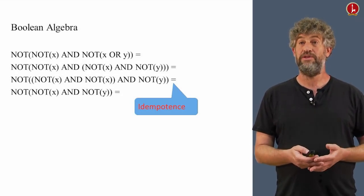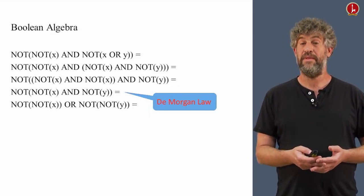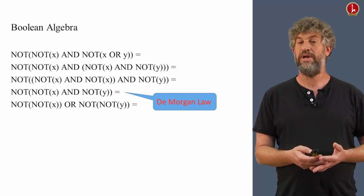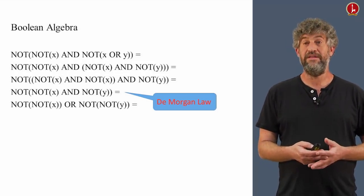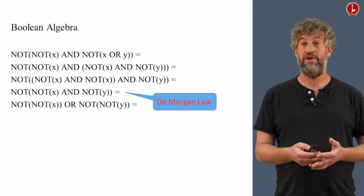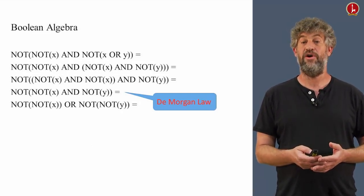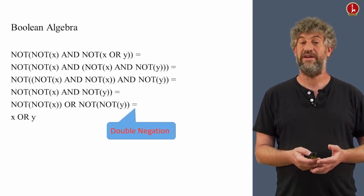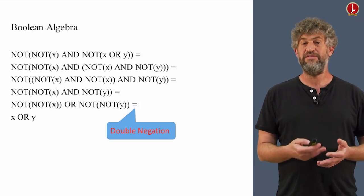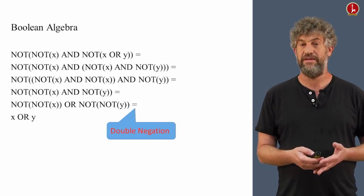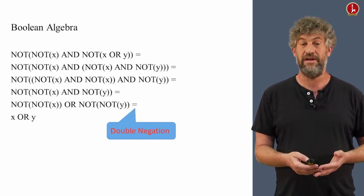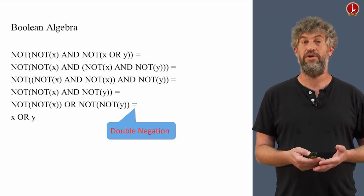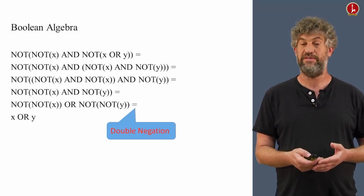Now, we're ready to use De Morgan law again. And now, we got into NOT(NOT(x)) OR NOT(NOT(y)). Now again, here's another law that we didn't list explicitly, but you obviously all know, that NOT(NOT(x)) is always equal to x. So, using the double negation law, we can simplify that to x OR y. That just gives you some demonstration that you can basically manipulate Boolean expressions, sort of like you manipulate arithmetic expressions in elementary school.